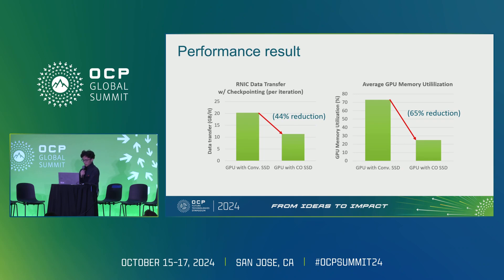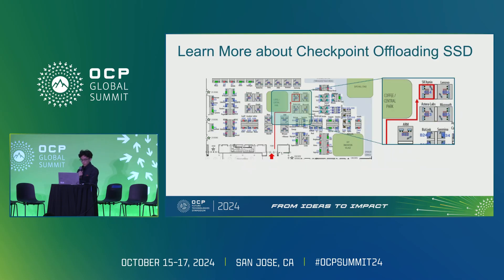Additionally, because we offload the optimizer state to the SSD, it no longer needs to be stored in GPU memory, saving 65% of GPU memory in our test. We have a demo booth in the expo room at the SK Hynix booth near the back center, with a demo video of the scenario described and staff available to answer questions. Thank you.